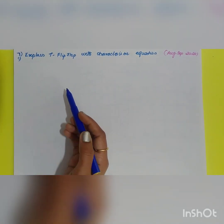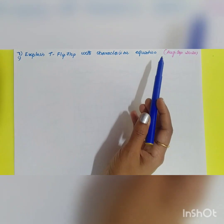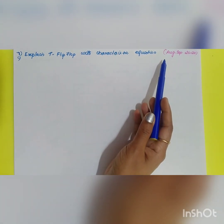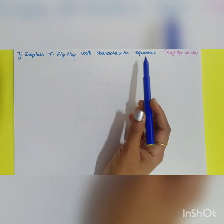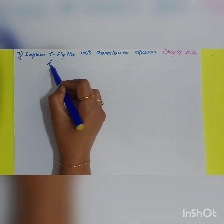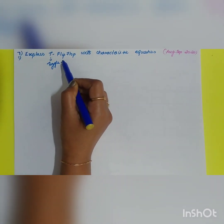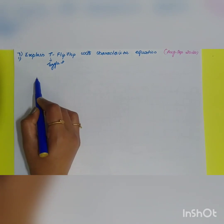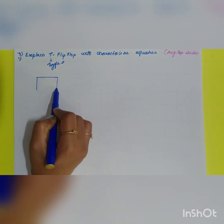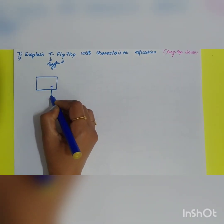The next question is: explain the T flip-flop with characteristic equation. This is a question from August/September 2020. T flip-flop is nothing but your toggle flip-flop, and it is frequently used in counters. First, let me draw the block diagram.